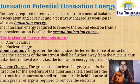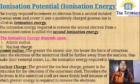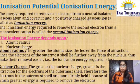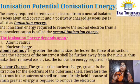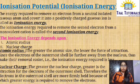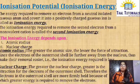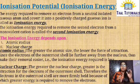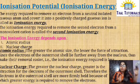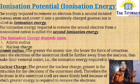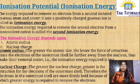Ionization Energy depends upon two things: Atomic Radius and Nuclear Charge. Regarding Atomic Radius — the greater the atomic size, the lesser the force of attraction from the nucleus to the outermost shell. Because the electrons of the outermost shell lie further away from the nucleus, their removal becomes easier and the Ionization Energy required is less.